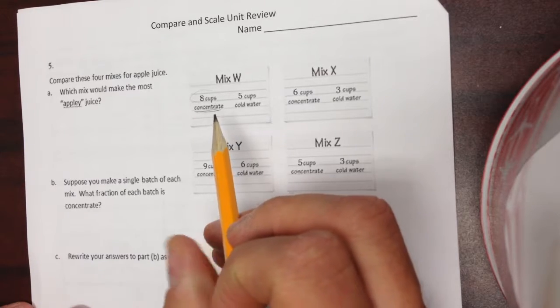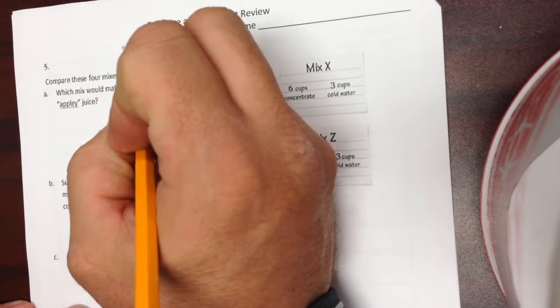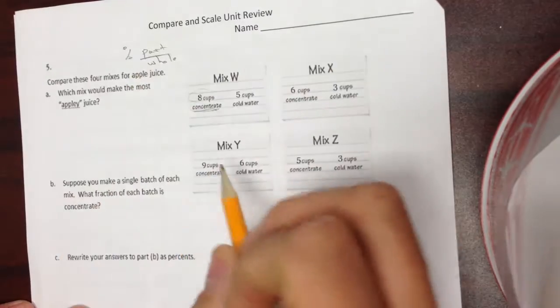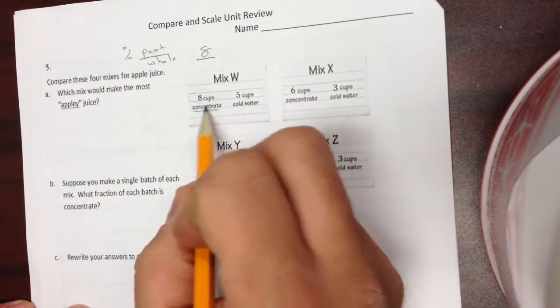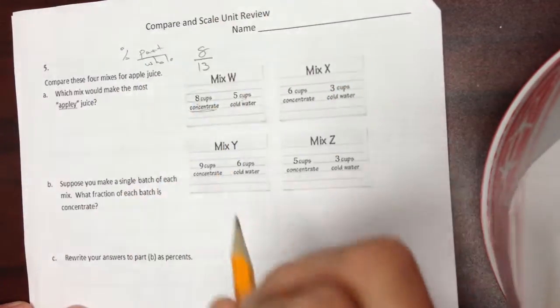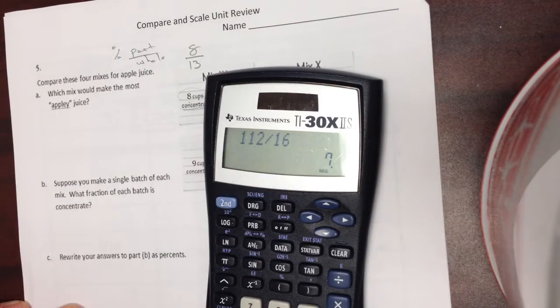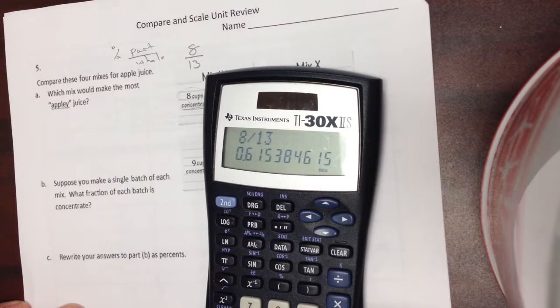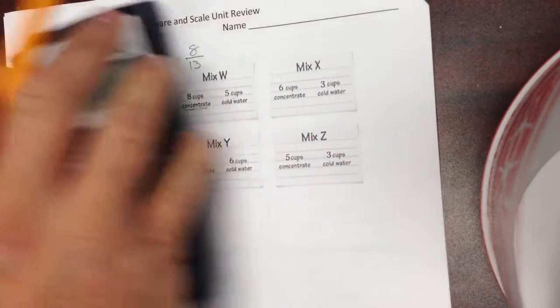To get a percent, a percent is part of a whole. So my part would be 8. My whole is not 5. That will give me a ratio. But if I want to do a percent part-to-whole, it's 13. 8, change that to a percentage. 8 divided by 13, times 100. It's approximately 62%.